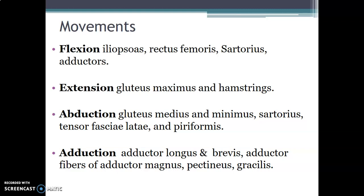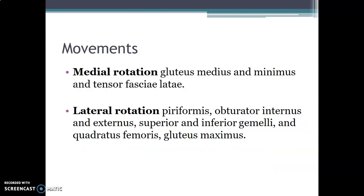Some element of abduction is also caused by sartorius, tensor fasciae latae, and piriformis muscle. Adduction is by adductor longus, brevis, and the adductor portion of adductor magnus — remember, adductor magnus has an adductor portion and a hamstring portion. The pectineus and gracilis also cause adduction at the hip joint.